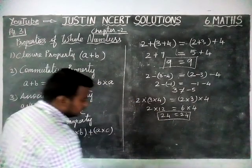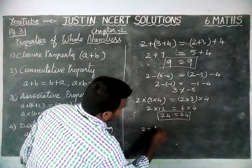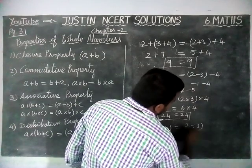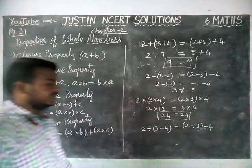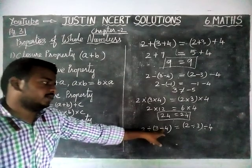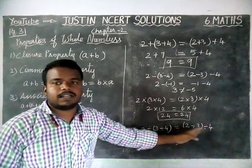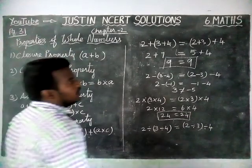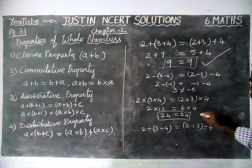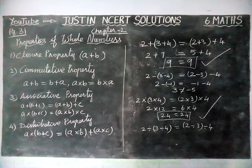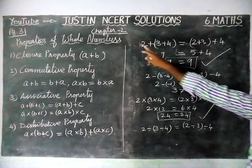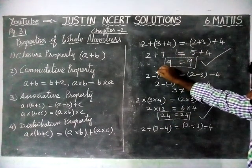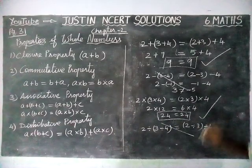Next, we check for division. 2 divided by (3 divided by 4) — in the first step itself, we cannot divide 3 by 4 to get a whole number. Similarly, 2 divided by 3 is not a whole number. Therefore, whole numbers are associative under addition and multiplication. Subtraction and division are not associative.